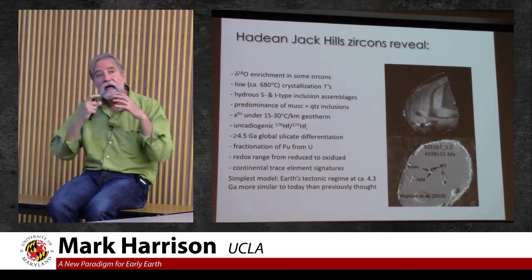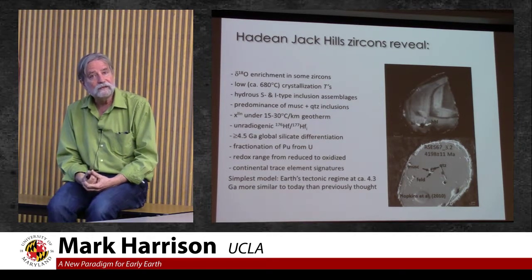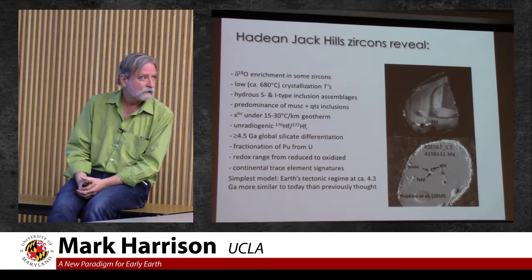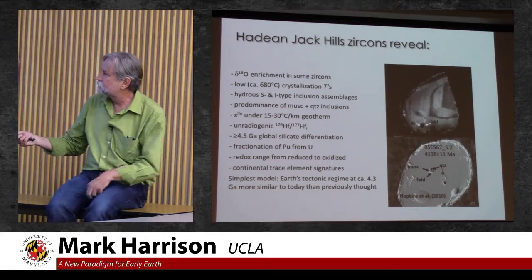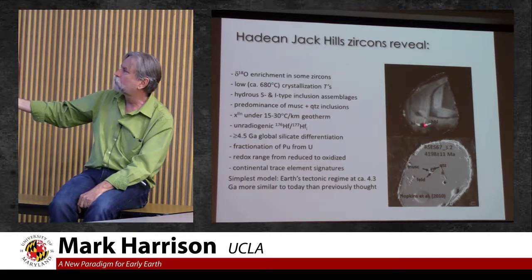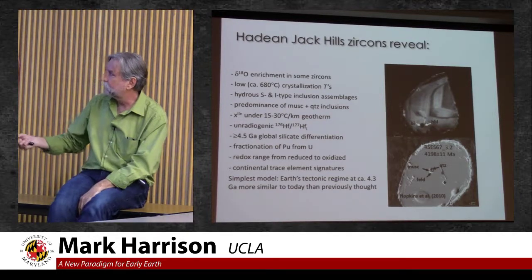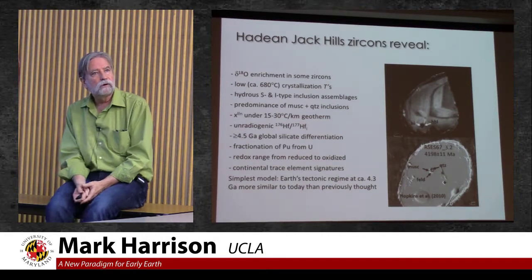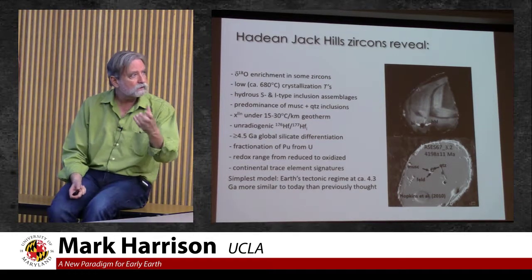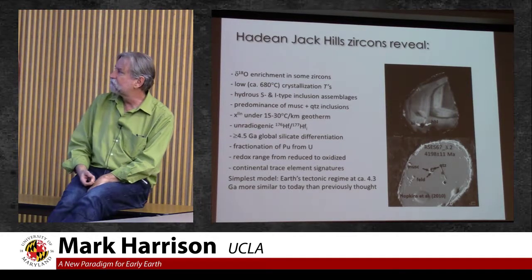In addition, every zircon we've looked at has inclusions — melt inclusions, mineral inclusions. We've dated 200,000 zircons from this one outcrop over the past 18 years. What we find in the Hadean zircons comes in two distinct flavors: one is a cordierite assemblage — ilmenite, hornblende, biotite, plagioclase — sort of what you'd see erupting out of Mount St. Helens. The other is quartz, muscovite, feldspar, and rutile, which looks like what you see in the Himalayan leucogranites — truly intercrustal anatectic melts that formed as a result of India colliding with Asia beginning about 55 million years ago.